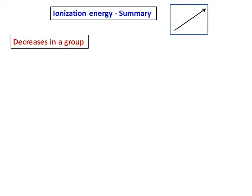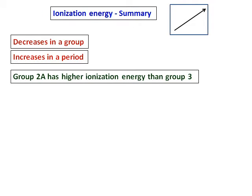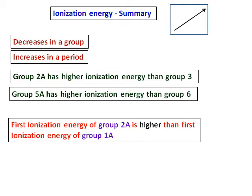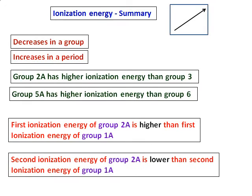Let's sum up what we have learned about ionization energy. As shown in the picture, it decreases in a group and increases in a period. Group 2A elements have higher ionization energy than group 3, and group 5A has higher ionization energy than group 6. Also, the first ionization energy of group 2A is higher than that of group 1A, as we need to remove an electron from a completely filled subshell. However, the second ionization energy of group 2A is lower than that of group 1A, because once one electron is removed, group 1A attains stable inert gas configuration, and removing a second electron from that stable configuration requires more energy.